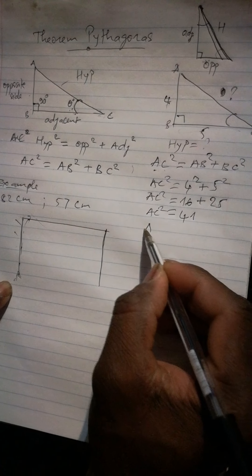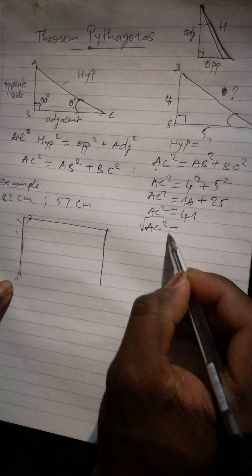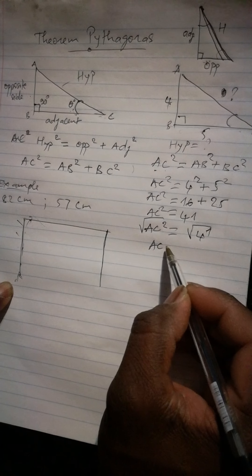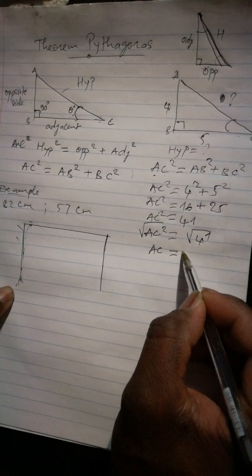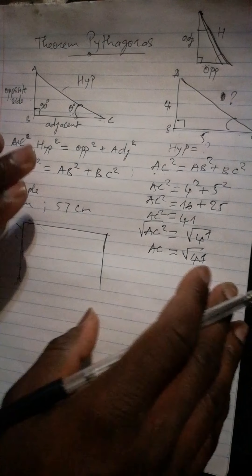Now here we apply the square root, AC square, we apply the square root to both sides. So AC equal to square root of 41.